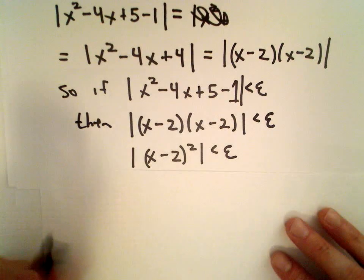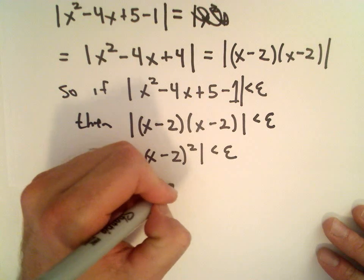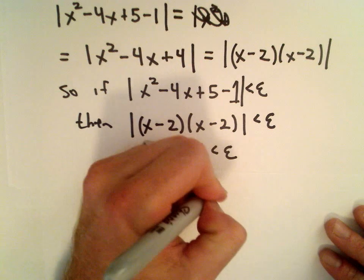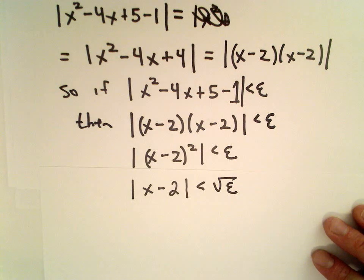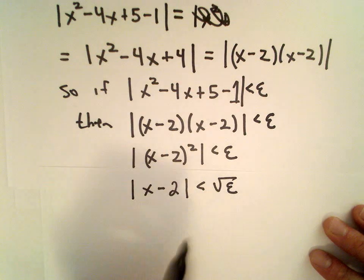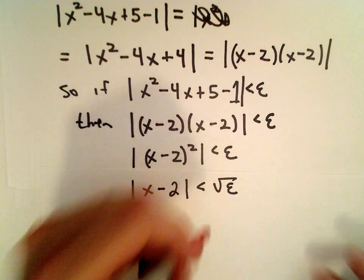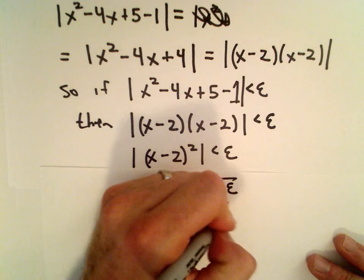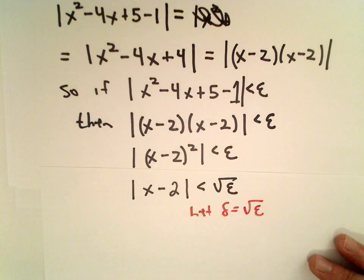If we take the square root of both sides, we get that the absolute value of x minus 2 is less than the square root of epsilon. So this is going to be our choice for delta — we're going to let delta equal the square root of epsilon.